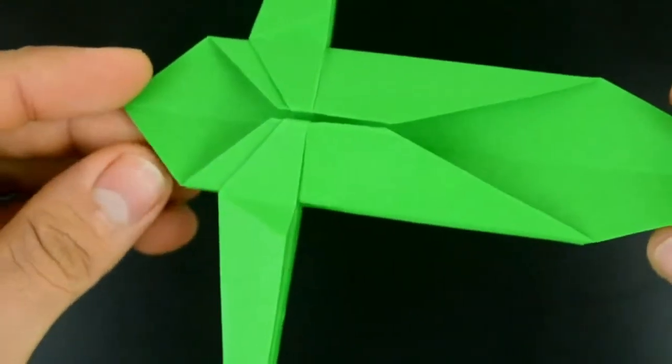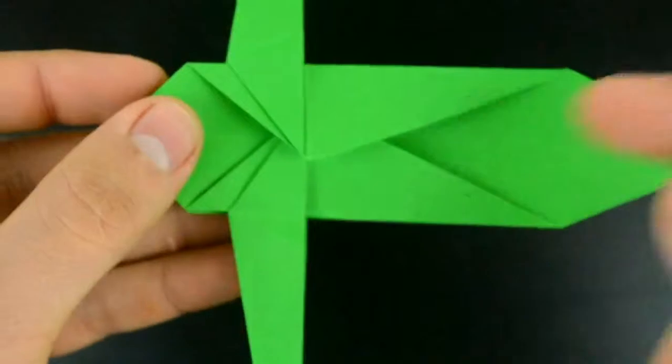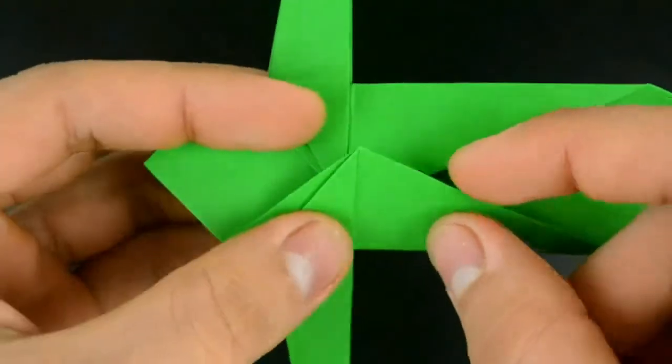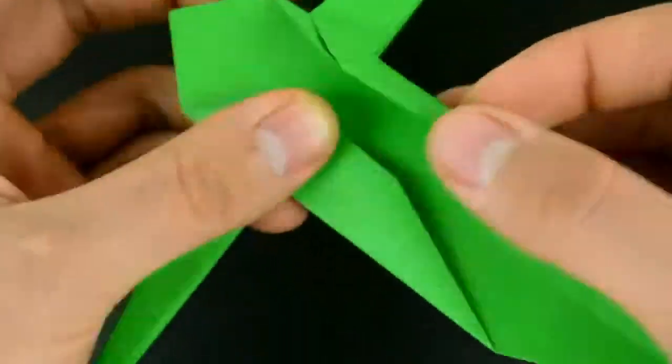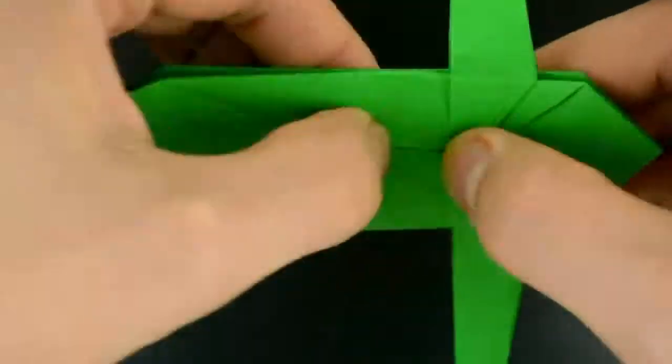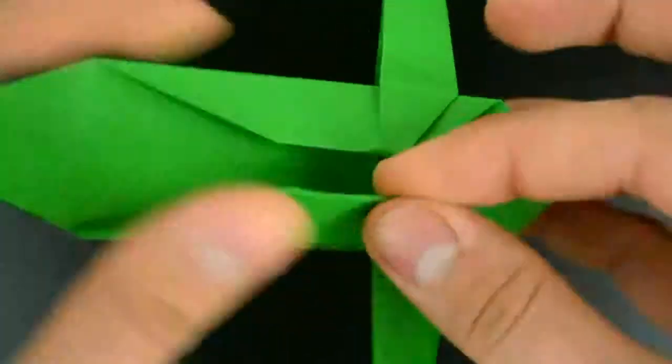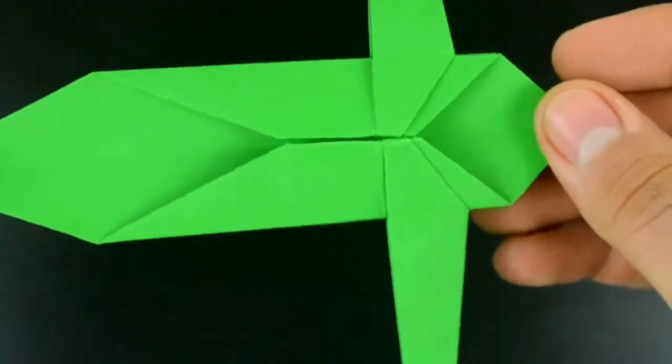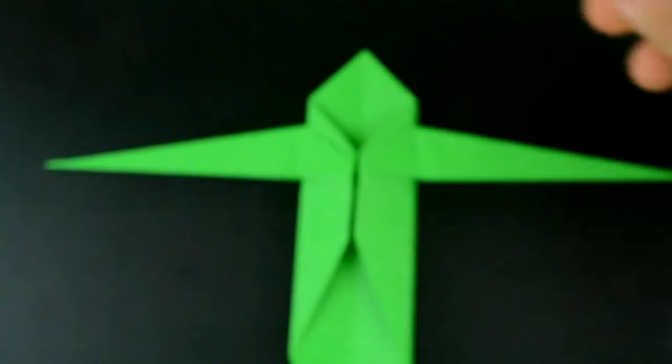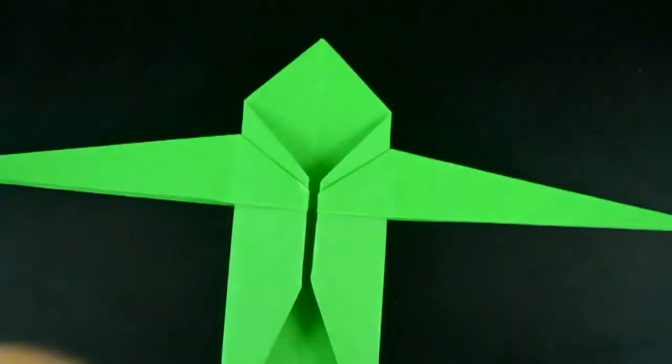Now turn the paper over and repeat on the other side. Both corners. Alright, now let's do the details of the eyes.